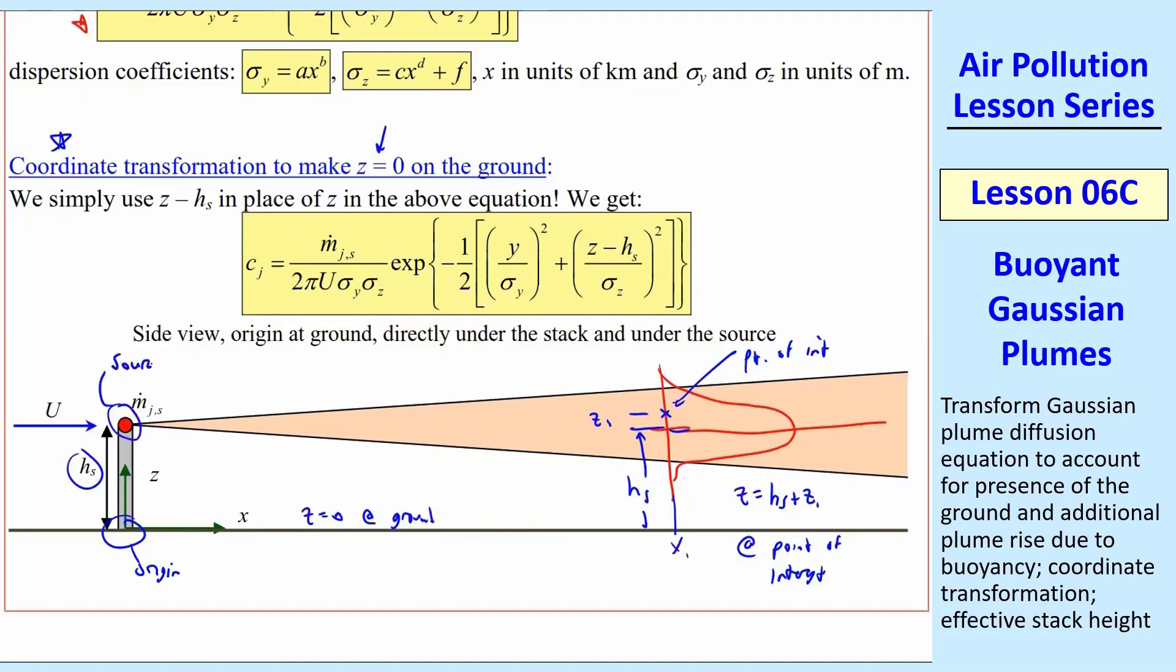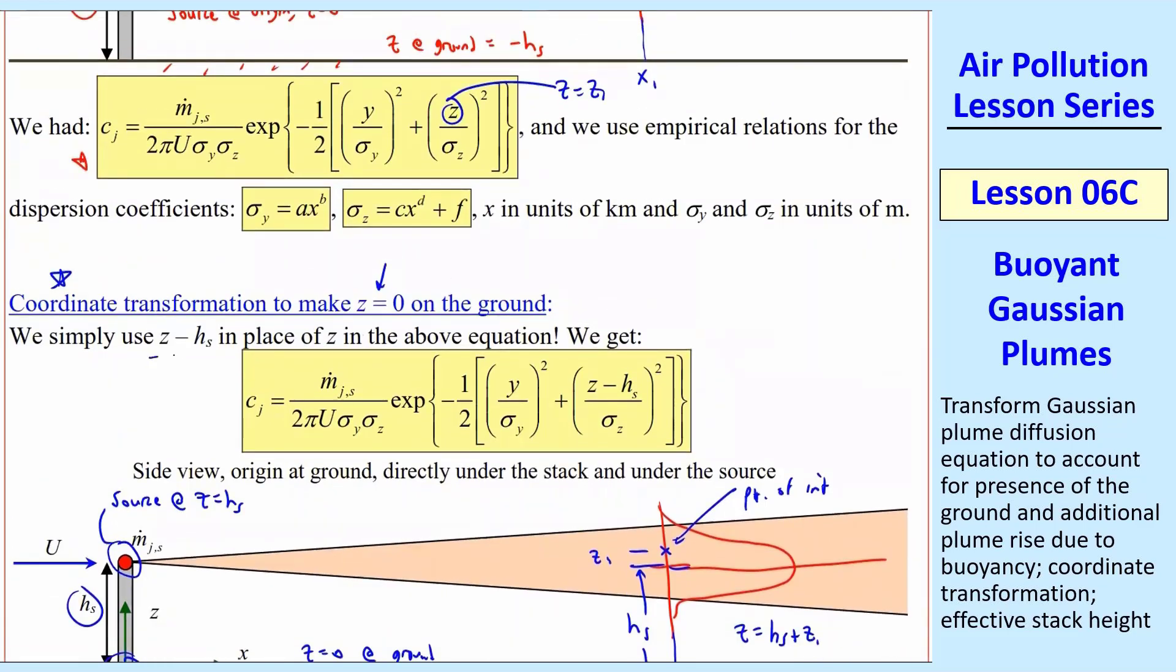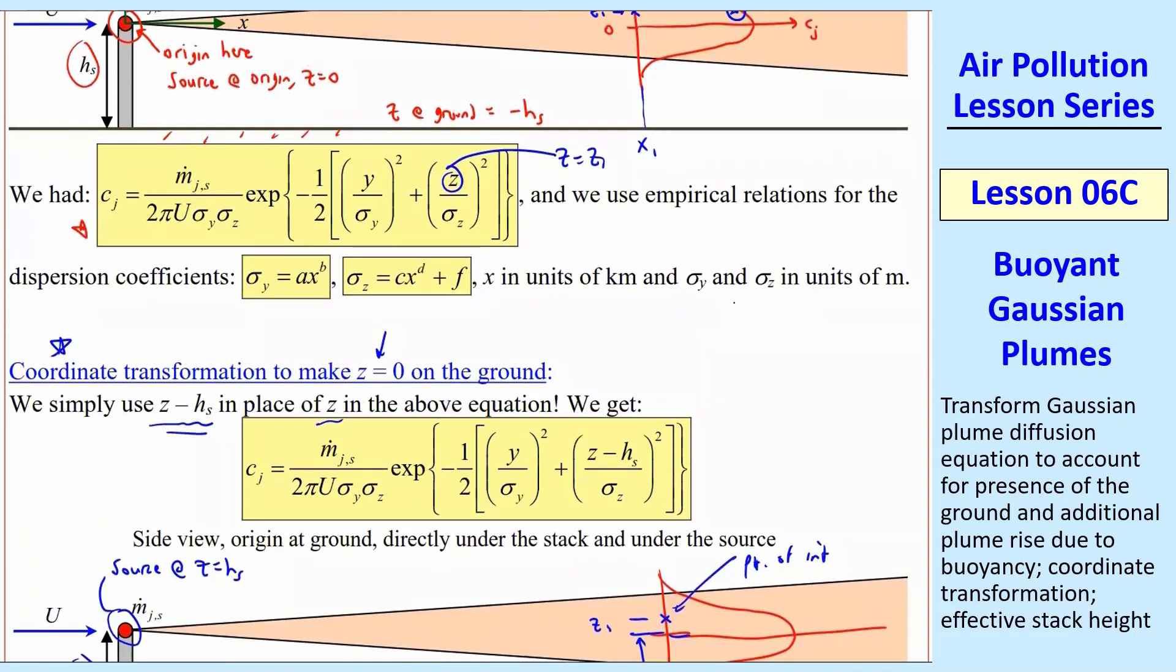So now instead of the source being at the origin, the source is at z equal hs, and the origin is down at the ground. If you think about this transformation, all we have to do is use z minus hs in place of z in the above equation. So notice that instead of that z, we have z minus hs. So this is the Gaussian plume equation with z equals 0 at the ground, whereas the one up here, which we used before, was the Gaussian plume equation with z at the source.